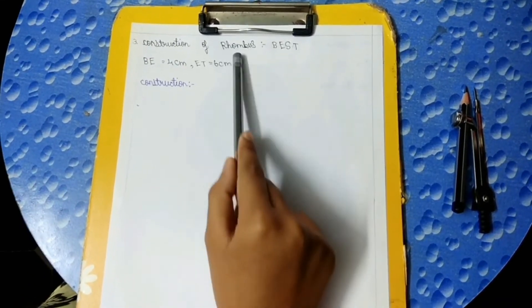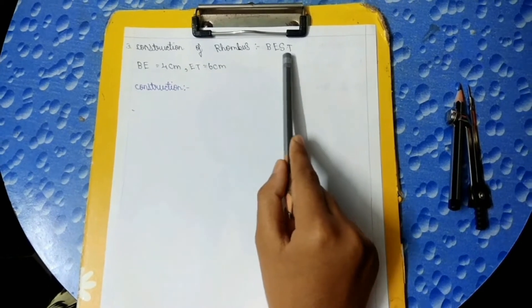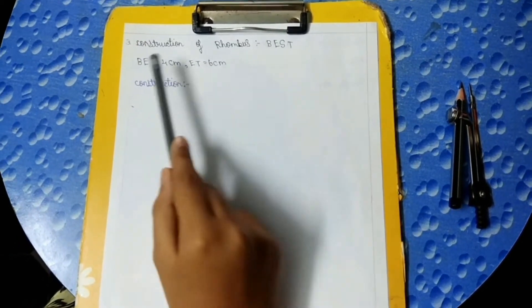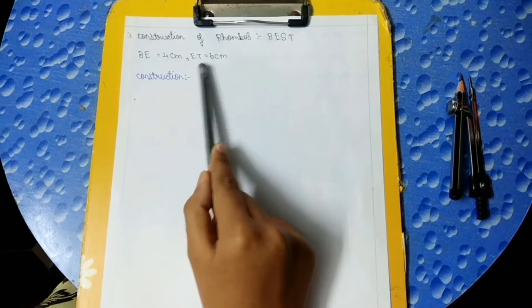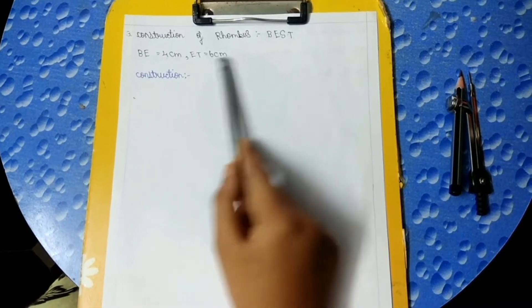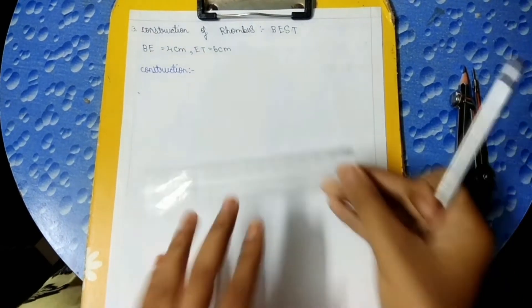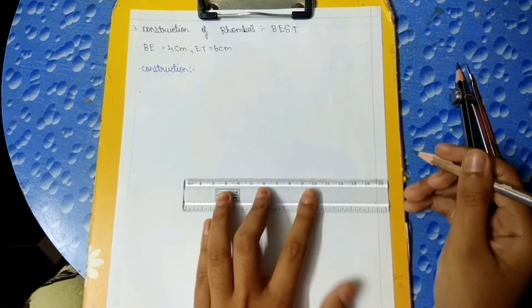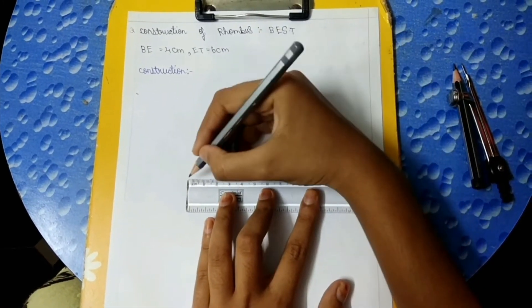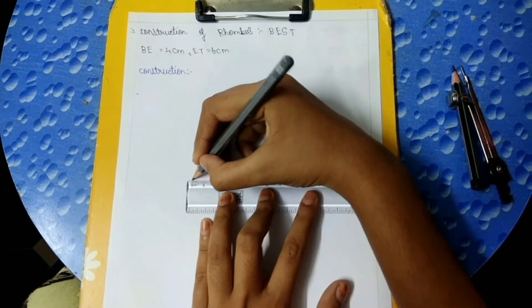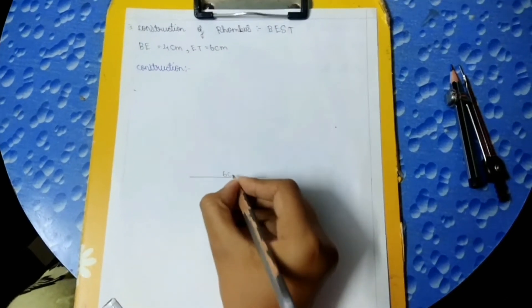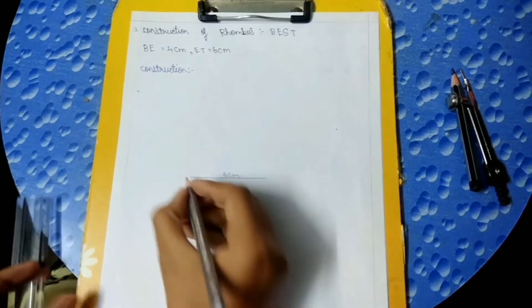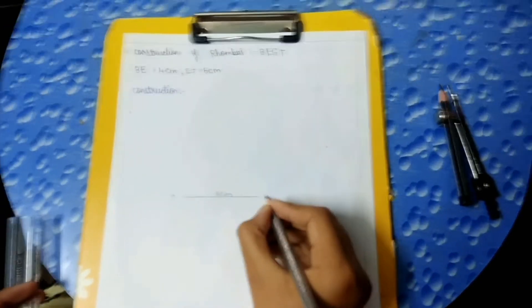Construction of rhombus BEST. BE is equal to 4 cm, ET is equal to 6 cm. Now let's construct the rhombus. First we should draw a line of 6 cm and name it as T and E.